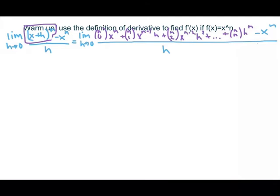Now we can simplify. n choose 0 is 1, so I have x to the n, and I also have negative x to the n — those add to be 0. The next thing I notice is that every single term that remains has an h, and that h I could factor to the front and then divide out with the h in the denominator.